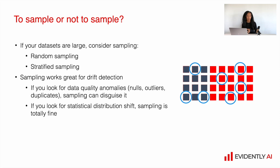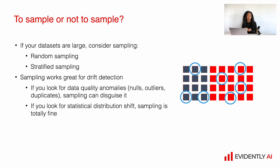Sampling works great for drift detection, but if you're looking for data quality anomalies at the level of individual objects — like specific missing values, outliers, or duplicates — sampling can disguise them. If you're looking for statistical distribution shift, sampling is totally fine. Make sure you understand what kind of analysis you want to perform before deciding on sampling.